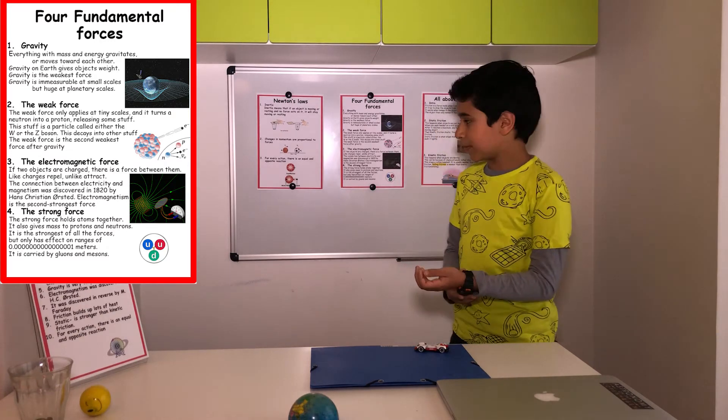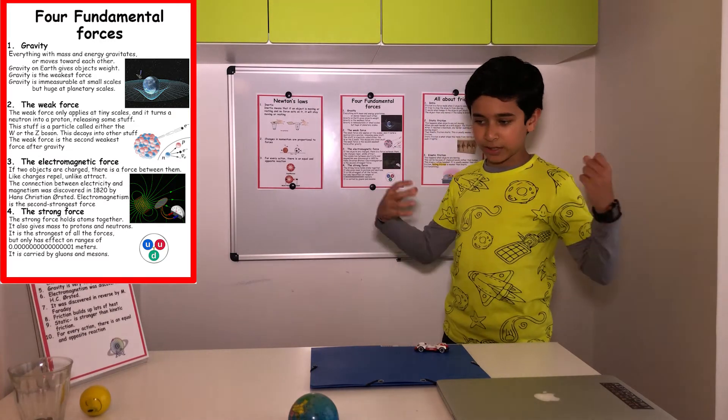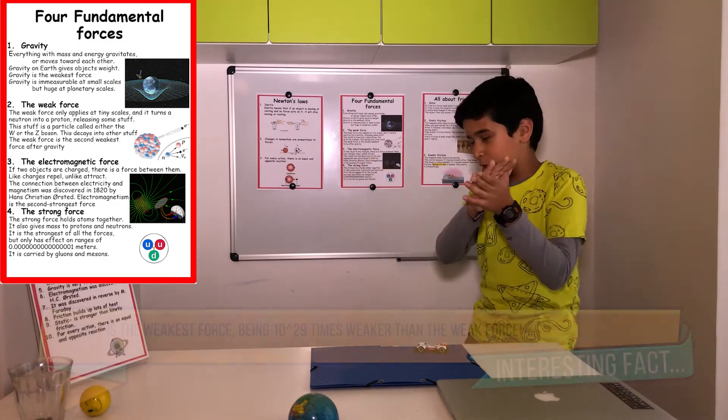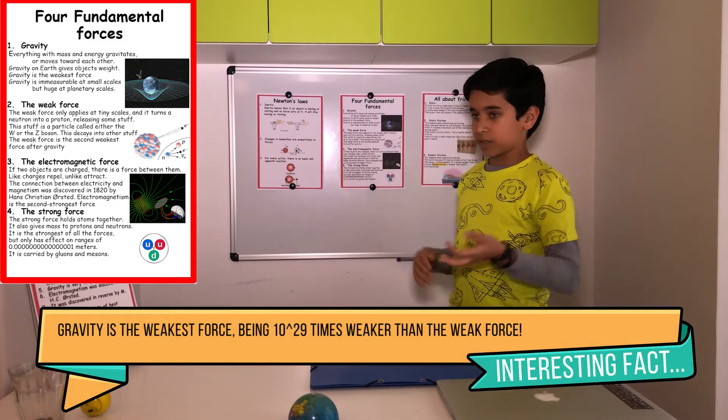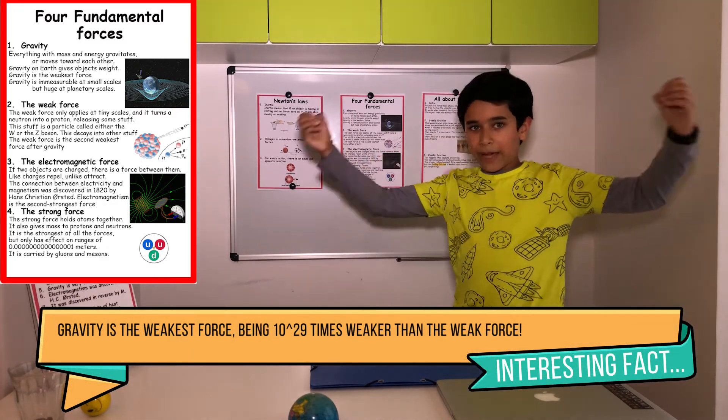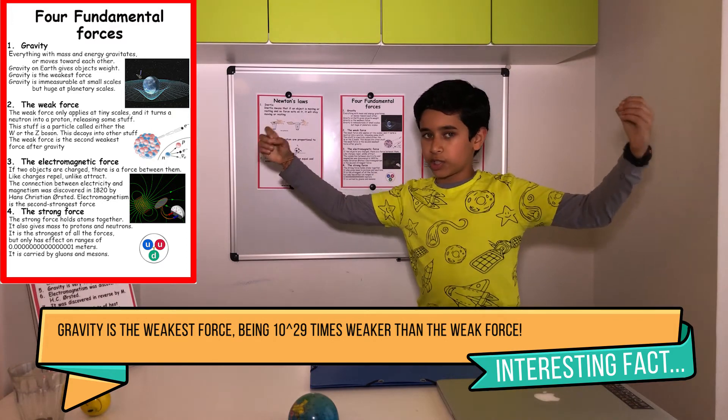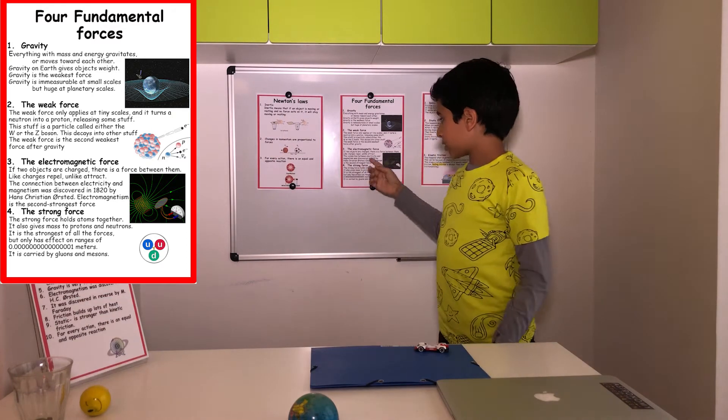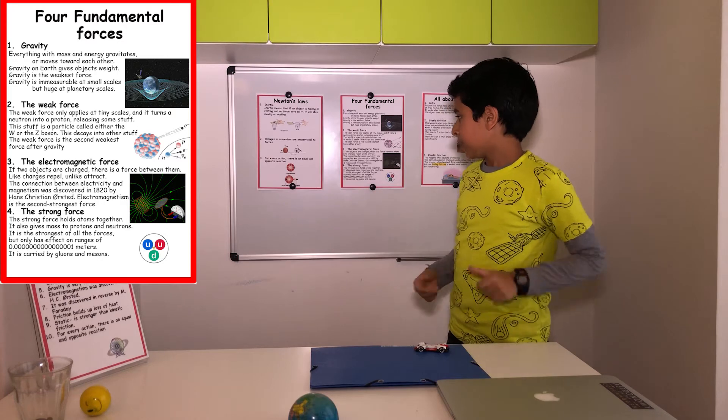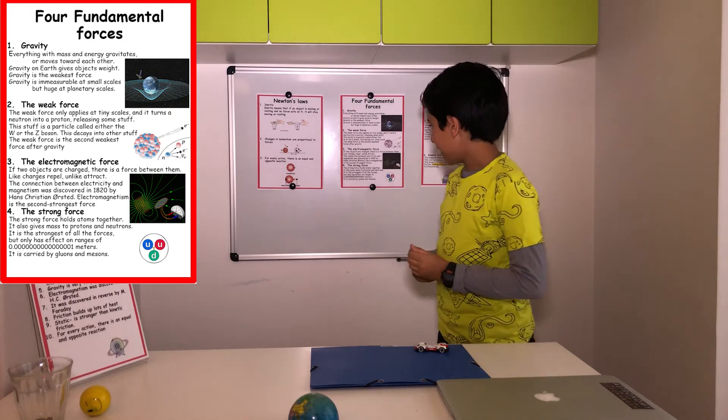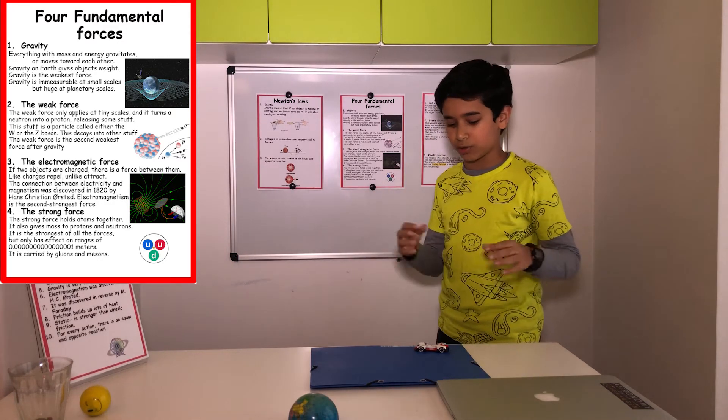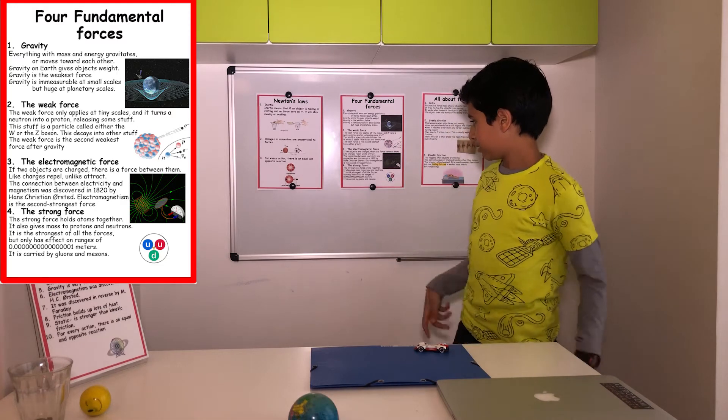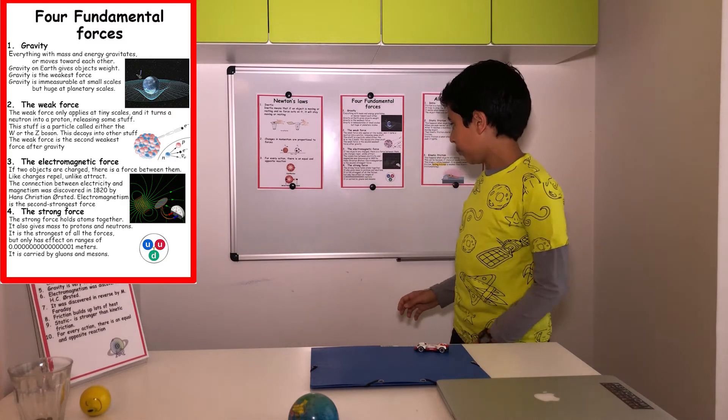The electromagnetic force. If two objects are charged, there's a force between them. Two magnets, force. Like charges repel, unlike or different charges attract. And the connection between electricity and magnetism was discovered in 1820 by Hans Christian Oersted, a Danish scientist. Electromagnetism is the second strongest force.